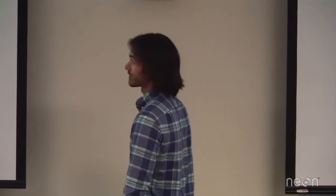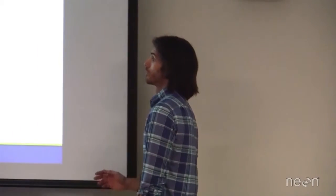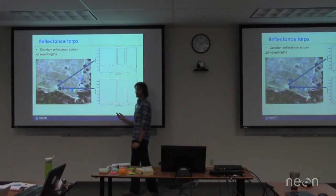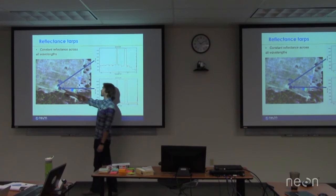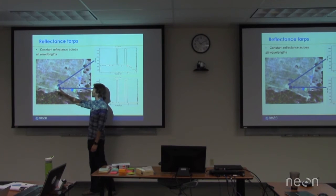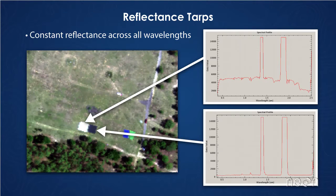And so, like Nathan mentioned this morning, we often also go out and set out tarps. This is the same image that he showed you from Ordway-Swisher Biological Station, where we put out our gray reflectance tarp here, and the black reflectance tarp here. And so, each one of these tarps is about 10 by 10 meters large. It's made by a company called Tracor, and they cost about $10,000 each. Does anyone want to take a guess why they cost so much?